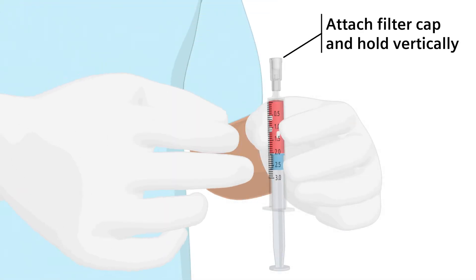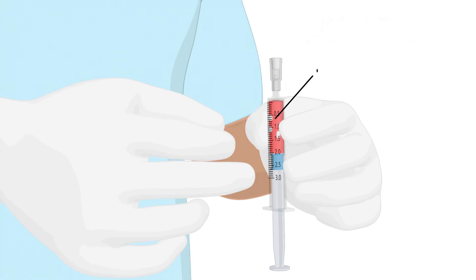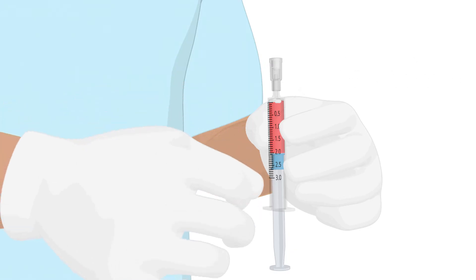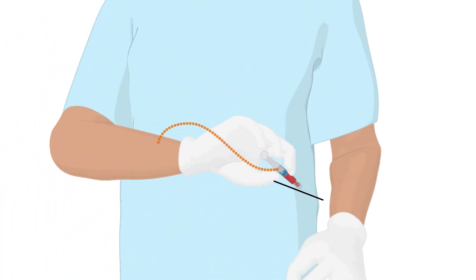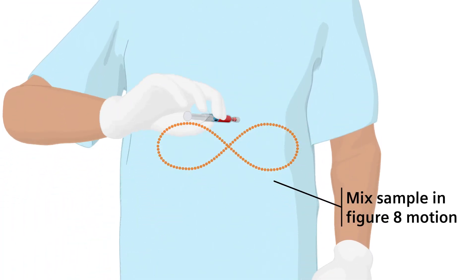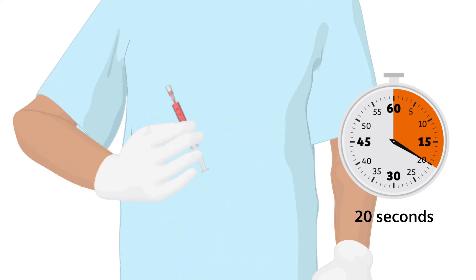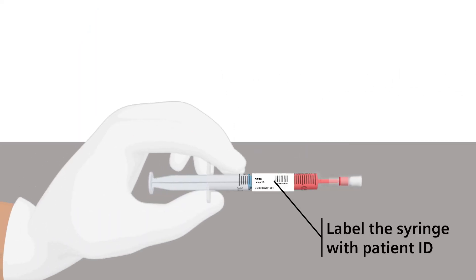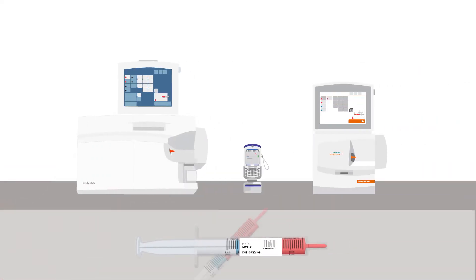Attach the filter cap on the luer tip of the syringe and hold the syringe vertically, then gently tap the syringe so that air bubbles are forced to the top. Expel any air bubbles into the filter cap. Mix the sample thoroughly by rotating your wrist back and forth for a minimum of 20 seconds. This helps to dissolve the heparin and minimize clot formation in the syringe. Label the syringe with the patient ID and immediately transport the sample to a Siemens Healthineers blood gas system.